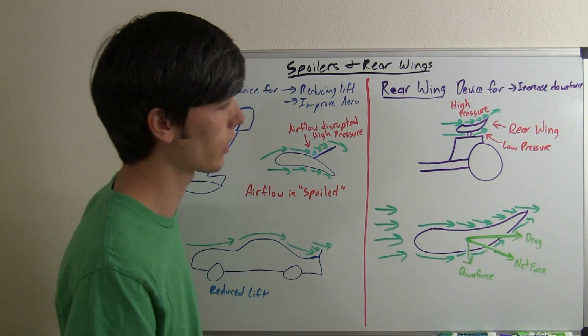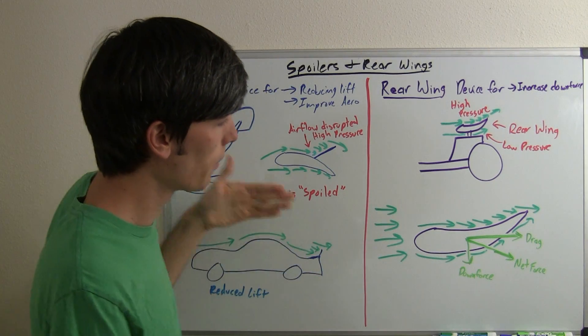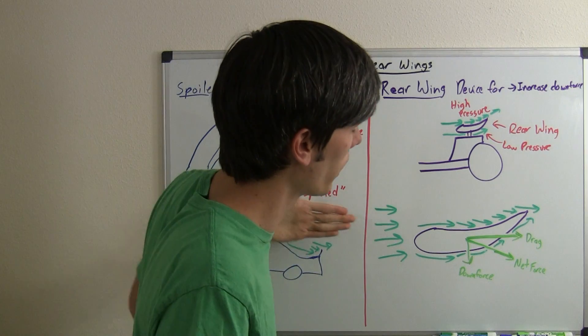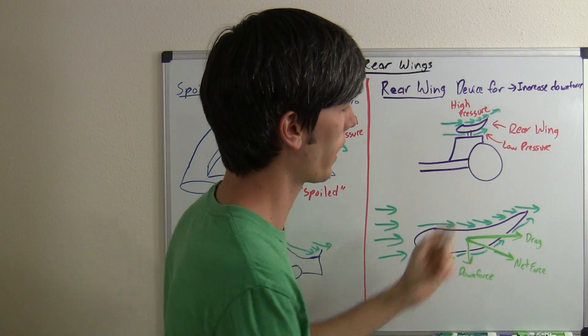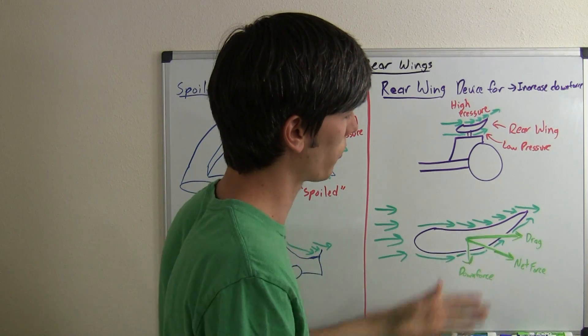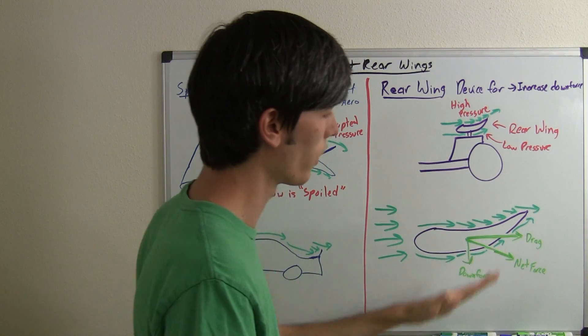Now taking a closer look at it so it kind of makes a little bit more sense, basically what this spoiler is doing is forcing the air on top to move upward. And by doing that you're creating a net downward force on the wing itself.